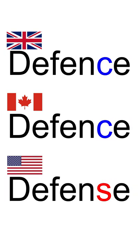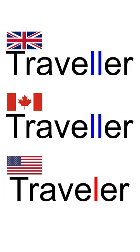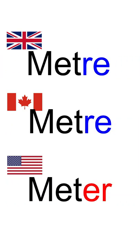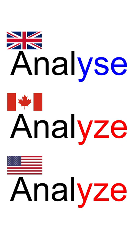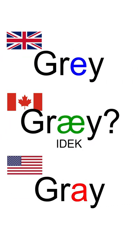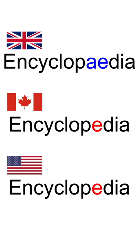As a Canadian, I will admit that it's hard to keep track of the correct spelling sometimes. For example, I discovered that the Canadian spelling of the word meter uses the RE suffix instead of ER way too late in life. And I constantly forget which spelling of grey I'm supposed to use.